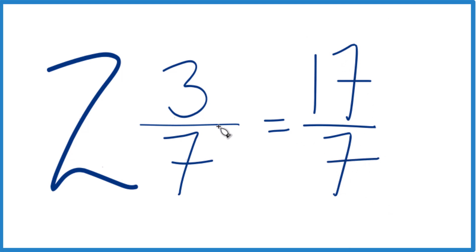Let's do it again. 2 times 7 is 14. 14 plus 3, that gives us the numerator, 17. Just bring the denominator over.